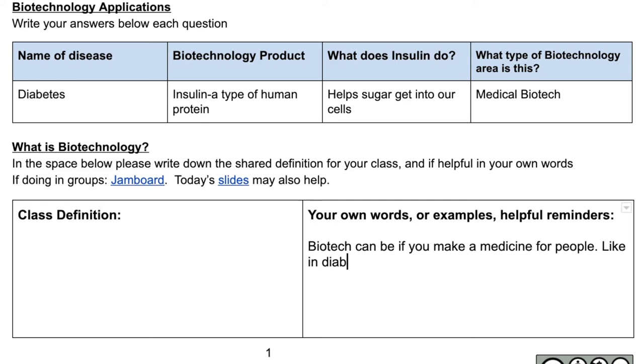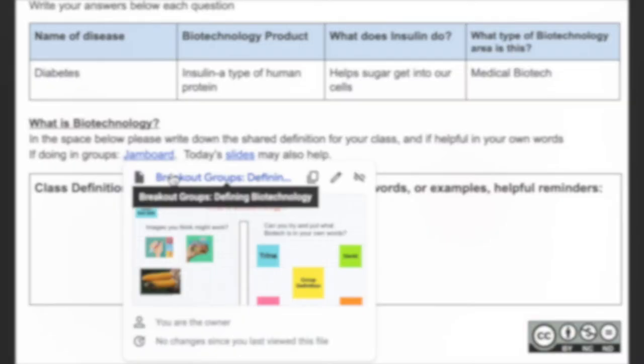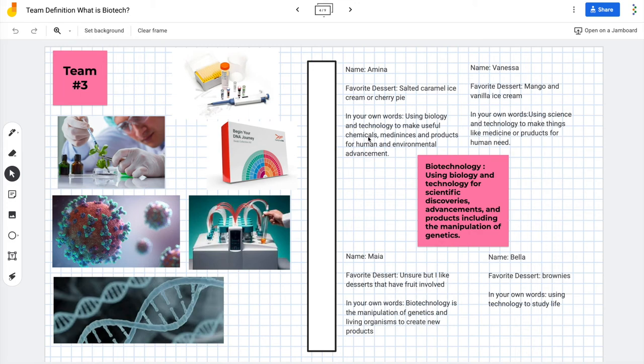In this example, each student was given a Jamboard to grab images from the internet before making their own group definition. This can be easily modified if you are working in the classroom with groups of students as well.